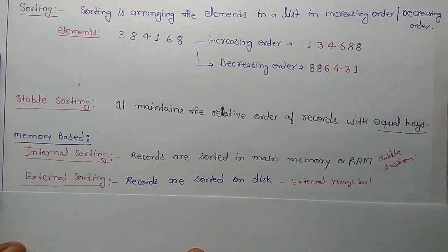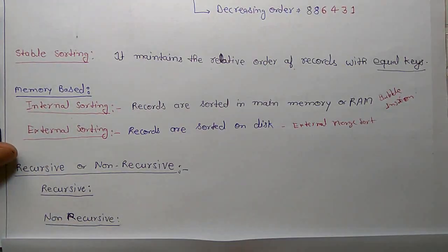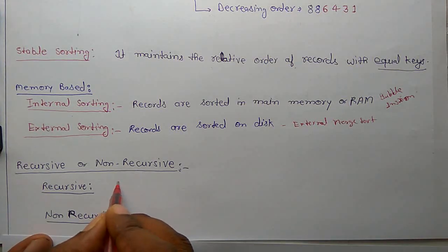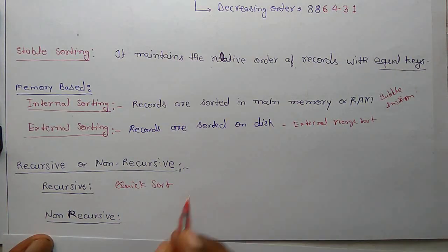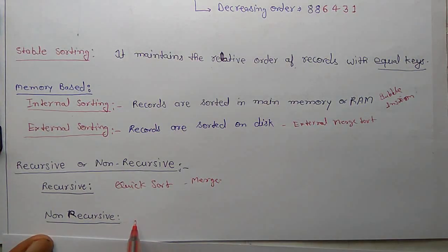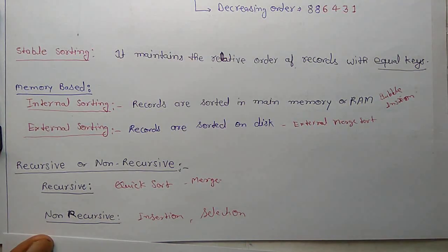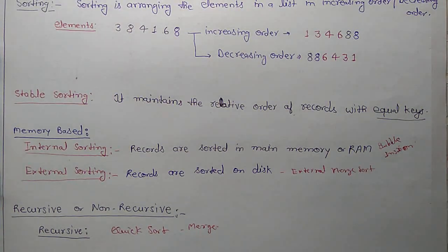We can also divide sorting into recursive and non-recursive. Recursive sorting is where a function calls itself — like quick sort and merge sort, which are recursive sorting algorithms. Non-recursive sorting uses loops for sorting, like insertion sort and selection sort. So this is the basic concept of sorting. Thank you.